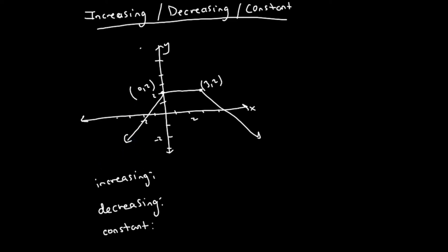Increasing is the same thing as going up — as x goes up, y also goes up. This is the part of the graph going up from left to right. The function starts to increase from negative infinity on the left, and it continues increasing until it reaches the point where x equals 0.